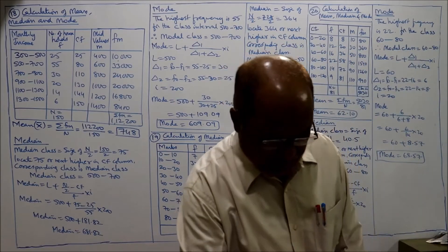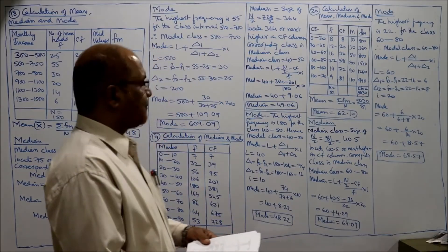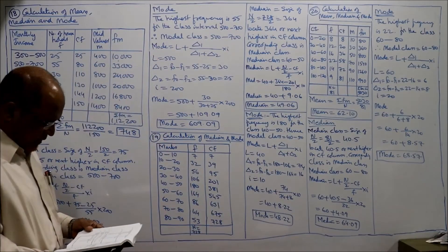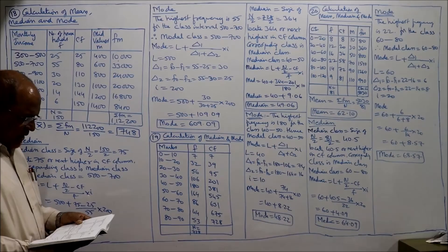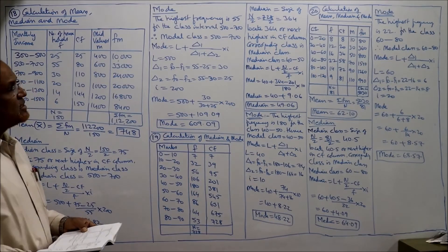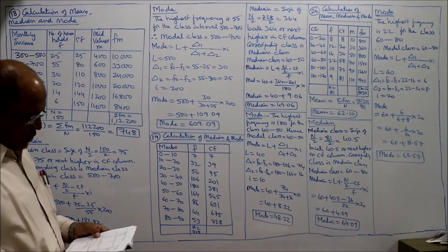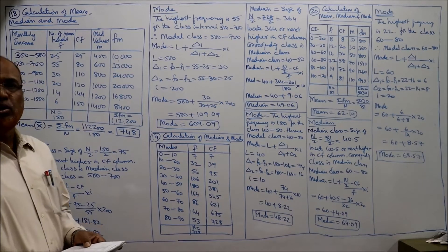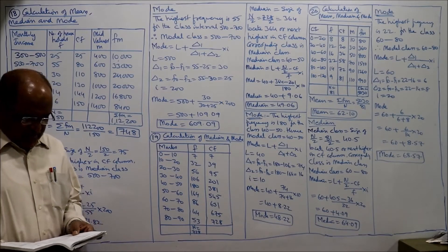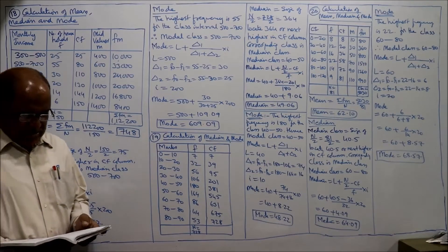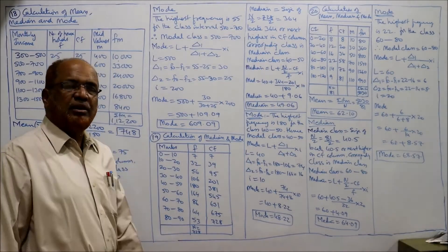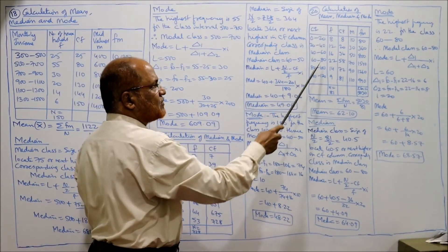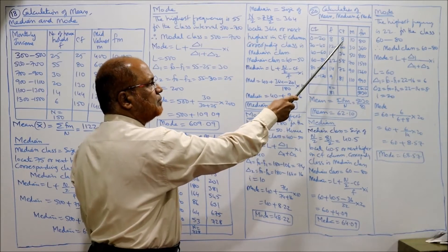Now see problem number 20. Calculate mean, median and mode for the following data. Class intervals: 0–20, 20–40, 40–60, with a width of 20. Frequencies are given; we calculate all three averages. Calculation of mean, median and mode: class intervals as given, frequencies as in the problem, CF column for median, and mid values for mean.